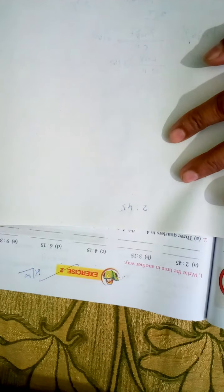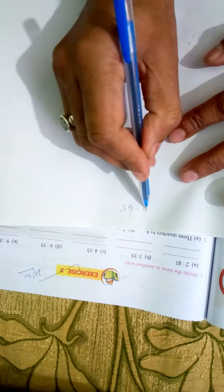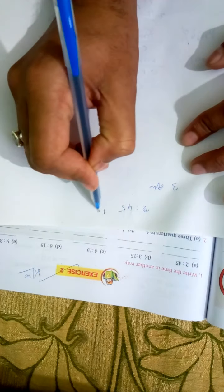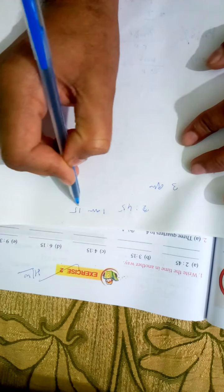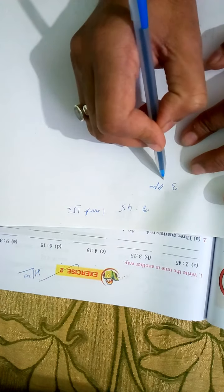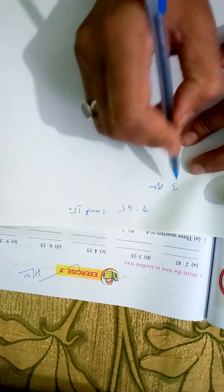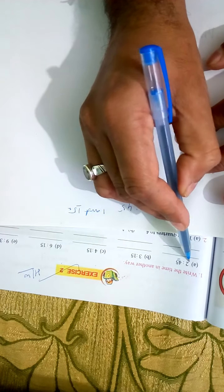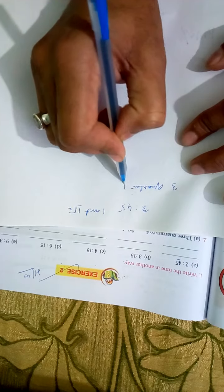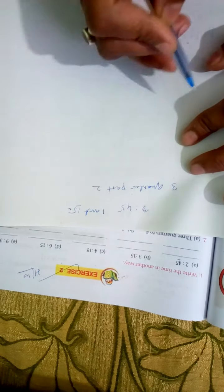How to write? Here you write 3 quarter. 1 quarter equals to 15 minutes. 2 quarter, 3 quarter past 2. Quarter past 2, similar.